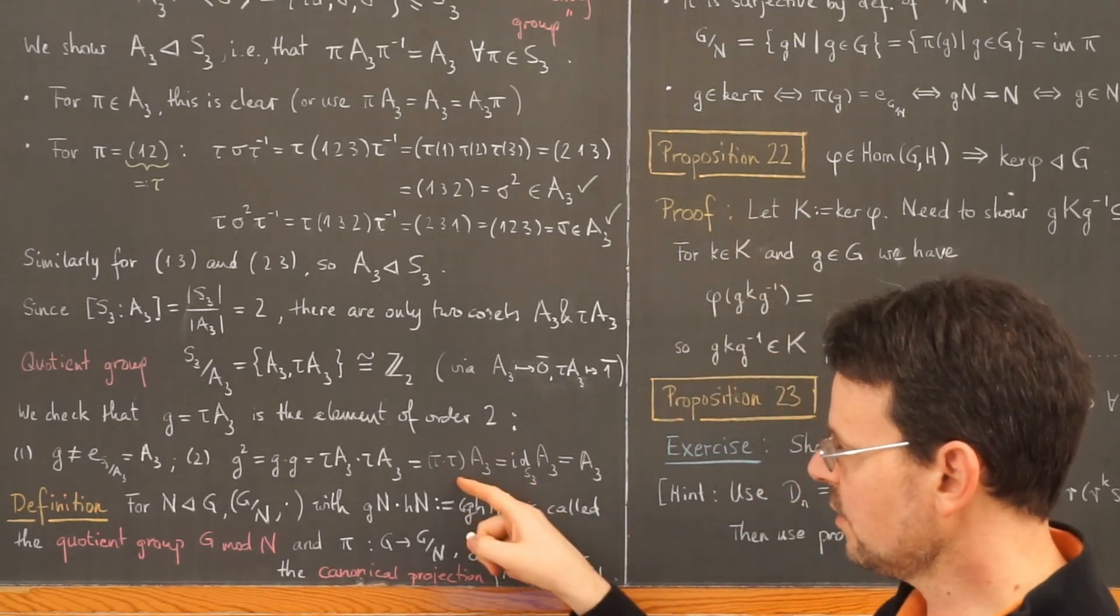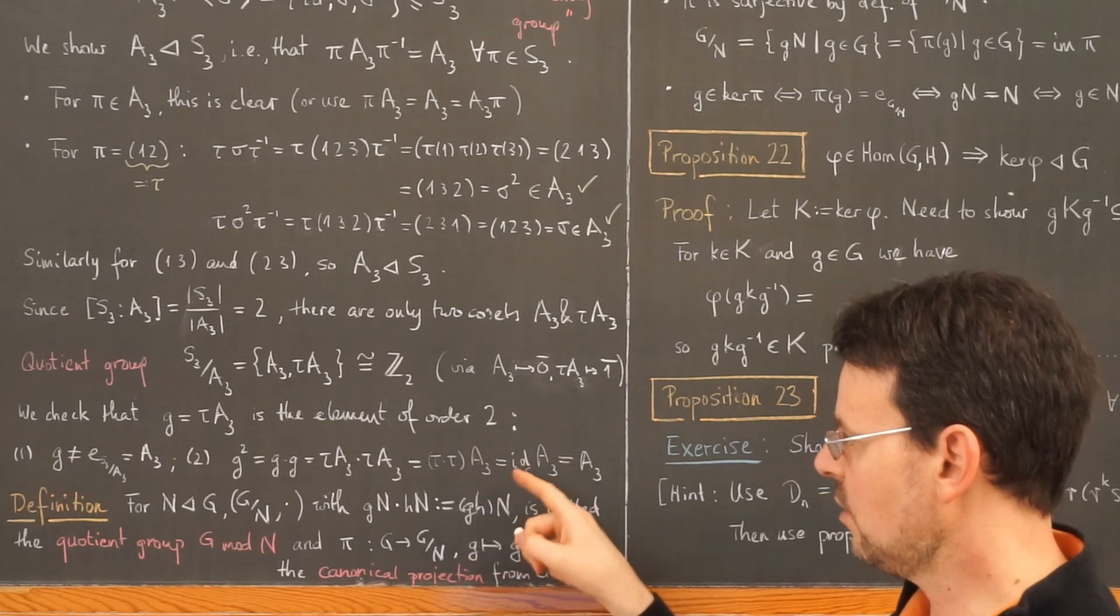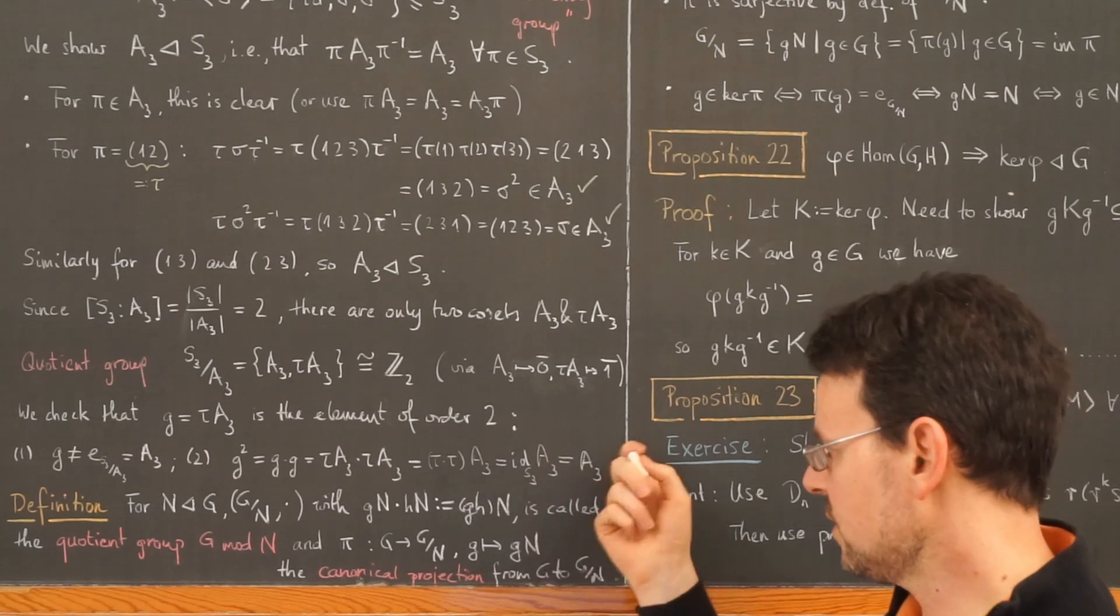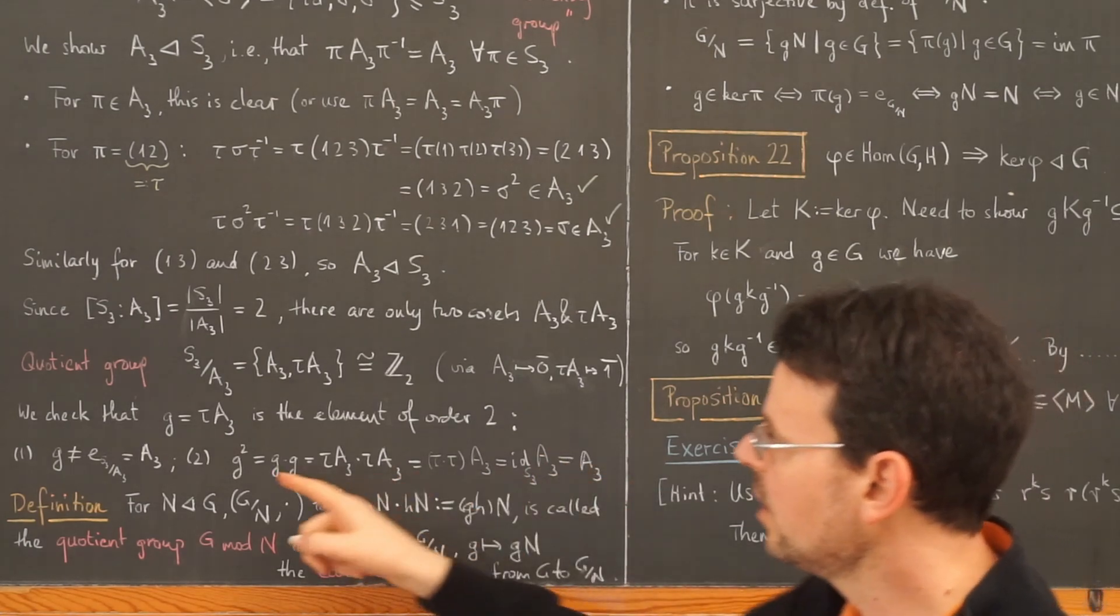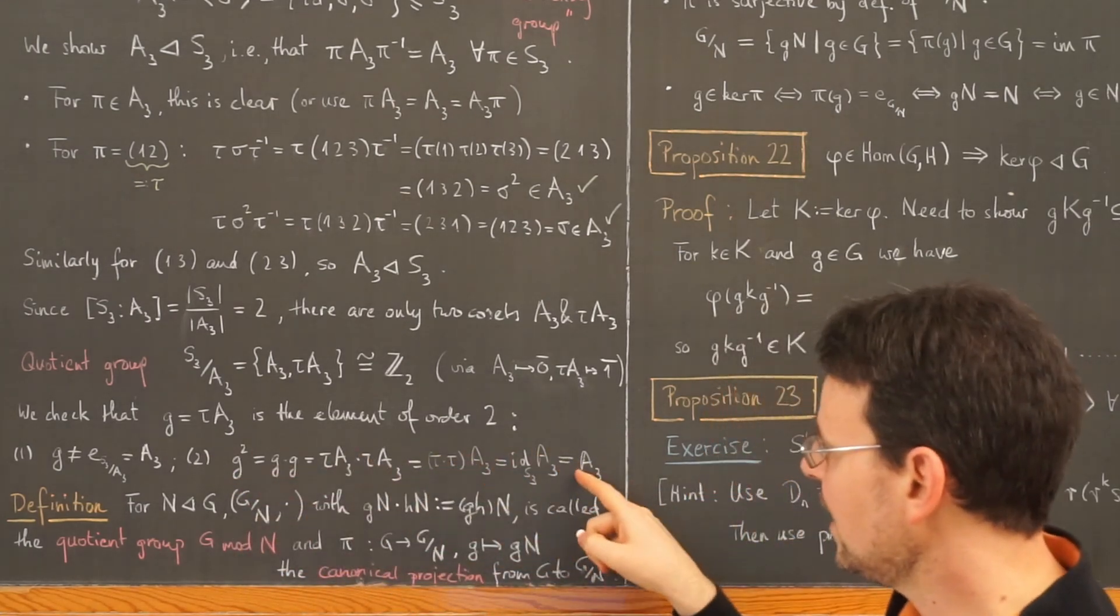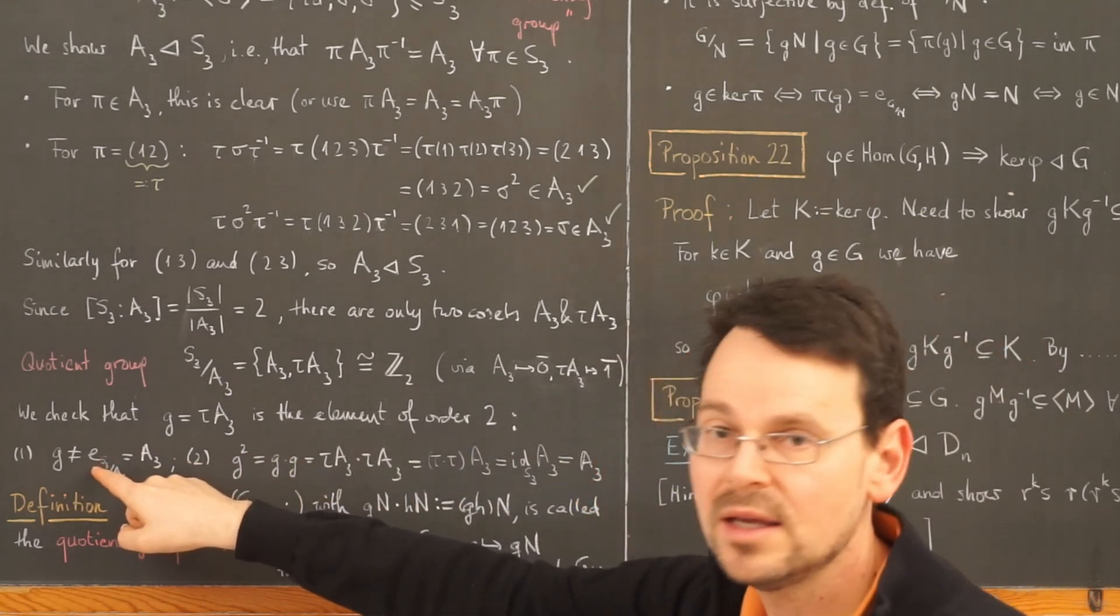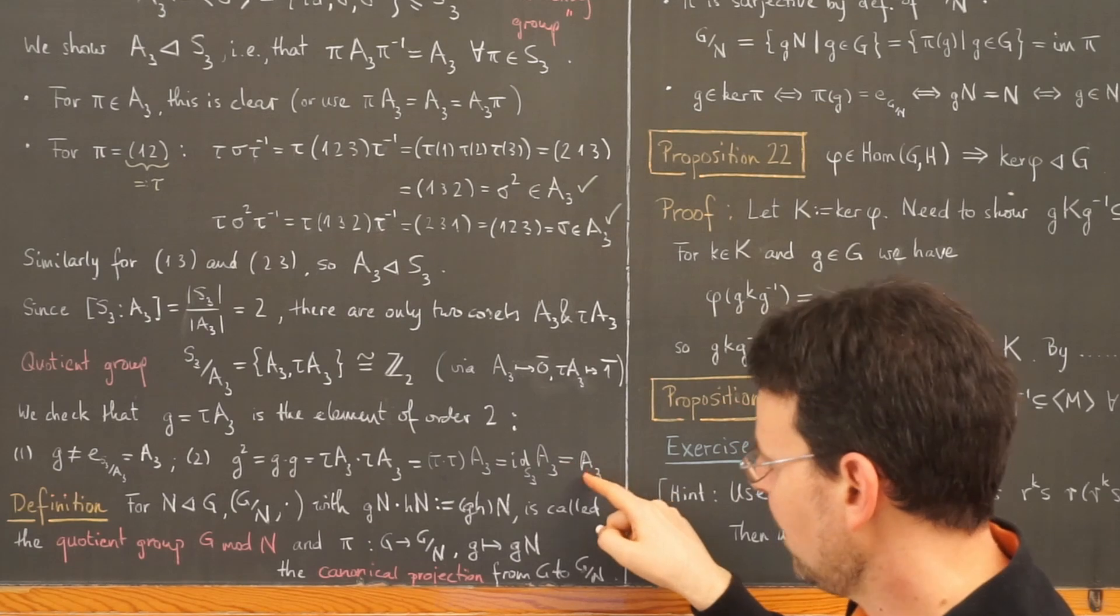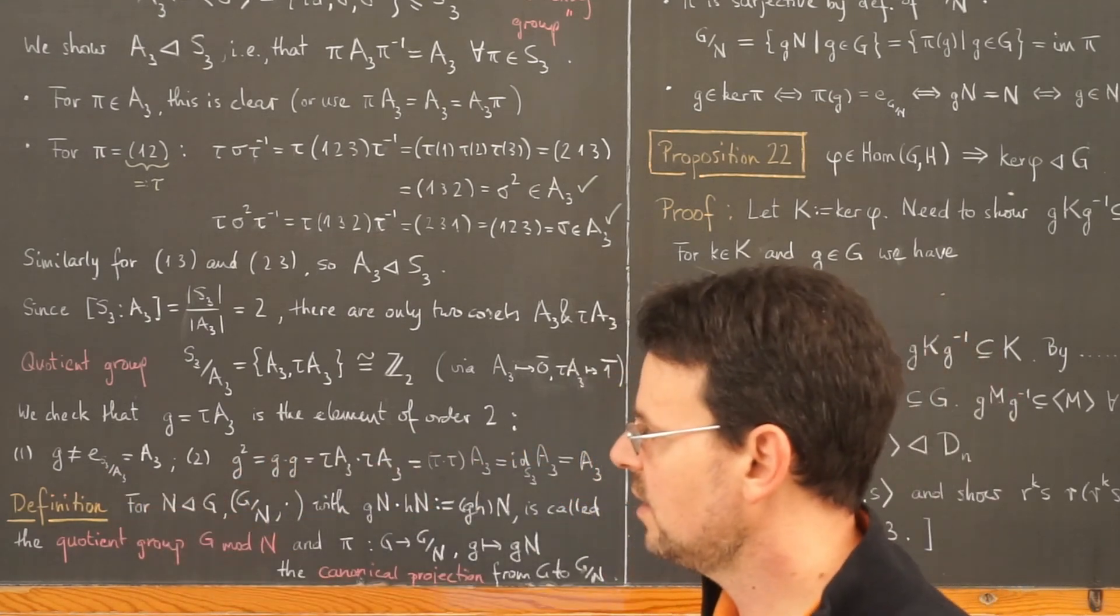So this coset here is the same as the coset of the identity with respect to A3, which is simply A3 itself, showing that G squared is the identity of my quotient group. Because again, the left coset A3 is the identity of the quotient group.